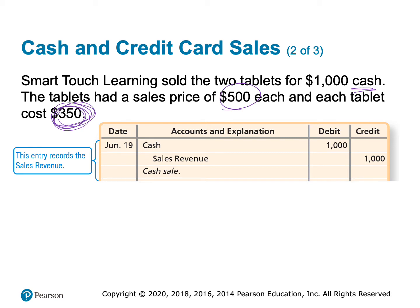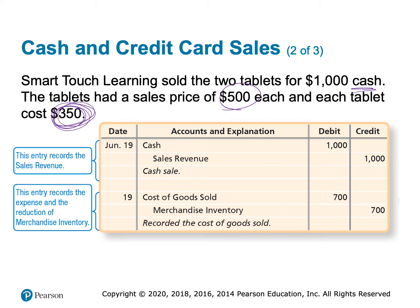That's the total sales price for the two tablets. Then we do that second entry to reduce inventory. Inventory is an asset and assets have a normal debit balance, so to reduce the inventory, I want to credit inventory. Then I debit my expense account, cost of goods sold. Expenses are always, always, always debited. This entry is for our cost — the tablets cost us $350 a piece and we sold two of them, so two times $350 means this entry is for $700.